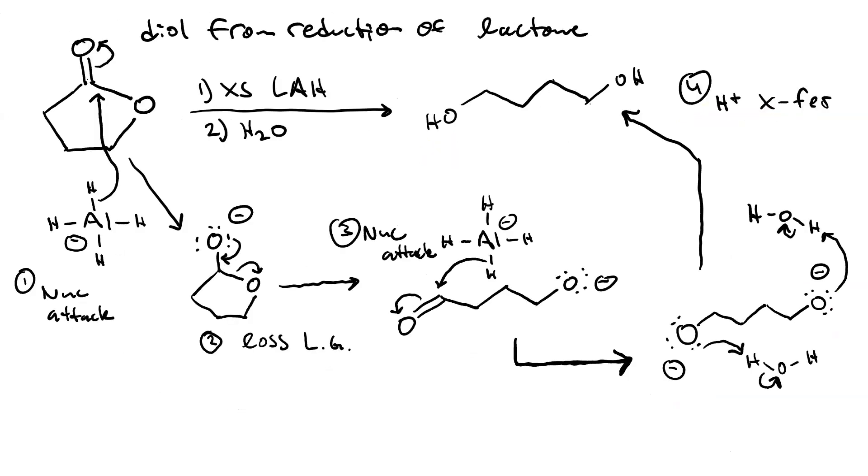And there it is for you, all on one screen. A diol from the reduction of a lactone. Four steps: one, nuke attack; two, loss of a leaving group and ring opening; three, nuke attack again; four, proton transfer. And five, proton transfer again. The proton transfer would happen in two steps, but who cares?